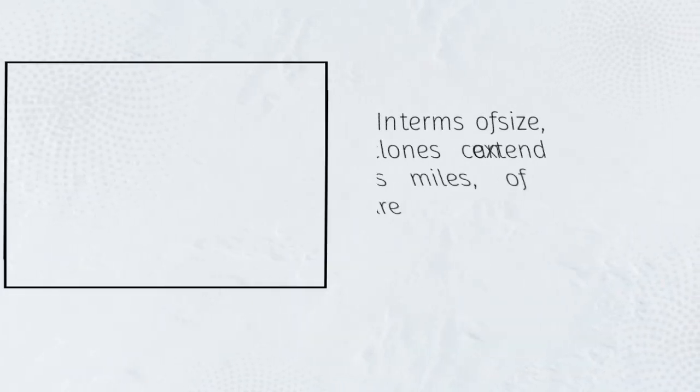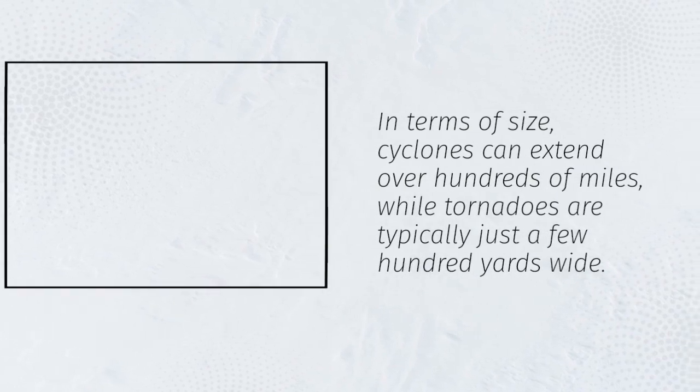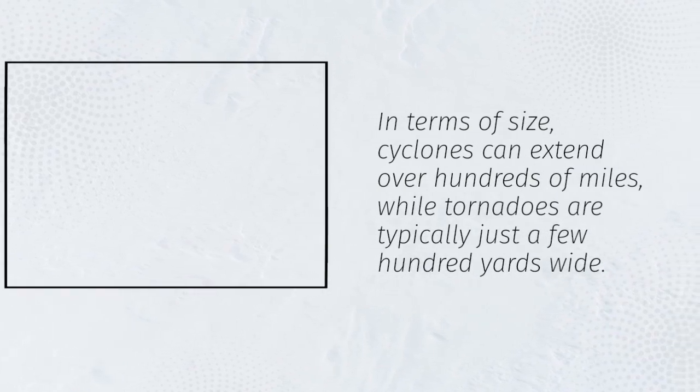In terms of size, cyclones can extend over hundreds of miles, while tornadoes are typically just a few hundred yards wide.